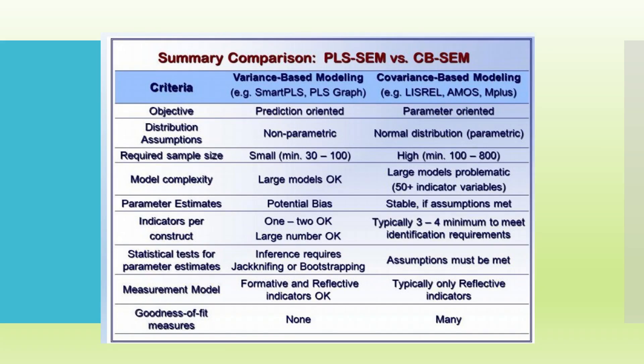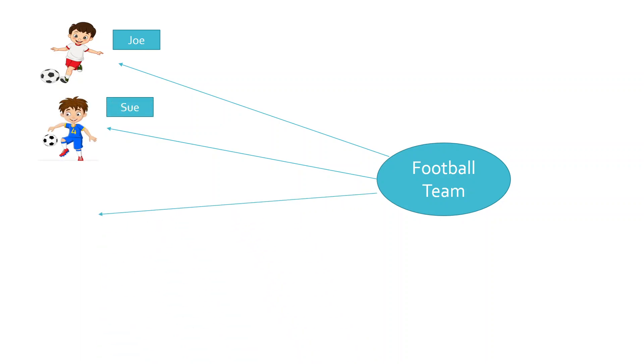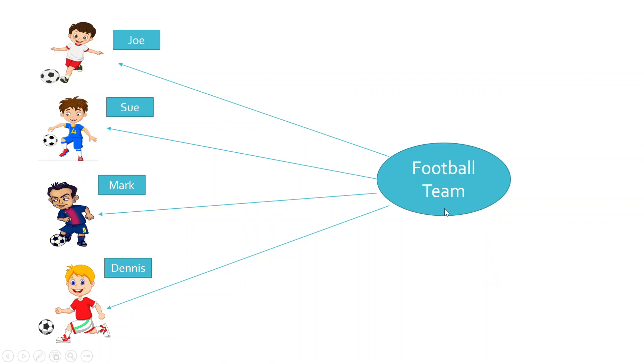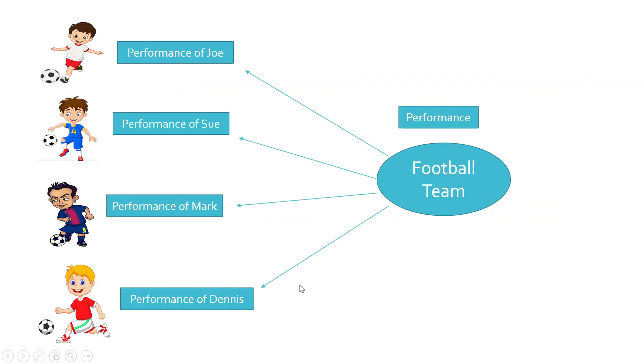Now, let's see the whole concept of structural equation model. Imagine that there is a football team which is represented by four players: Joe, Mark, and Dennis. Now, the performance of the football team largely depends on the performance of these four players. Let us replace this—let us use this same concept for our study.